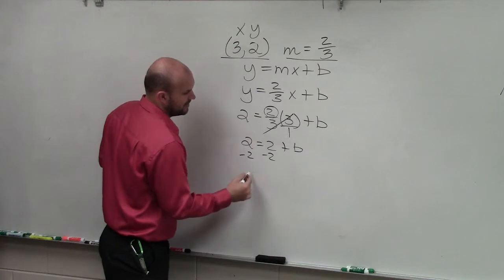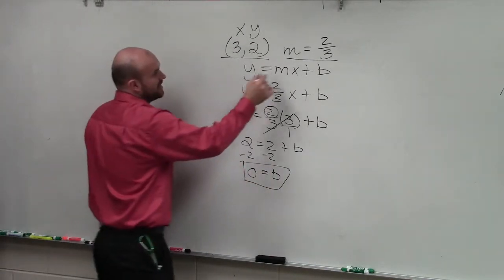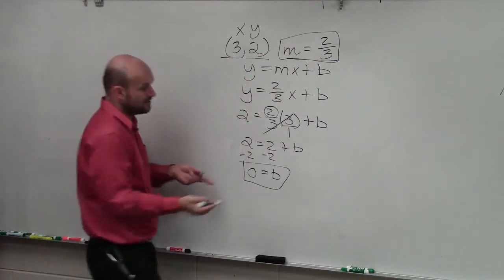So you have 2 equal to 2 plus b. Now I subtract 2, and I get 0 equals b. Now do I know what b is, and do I know what m is? Yes?